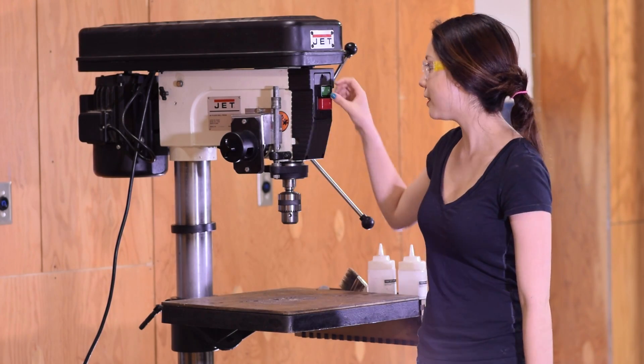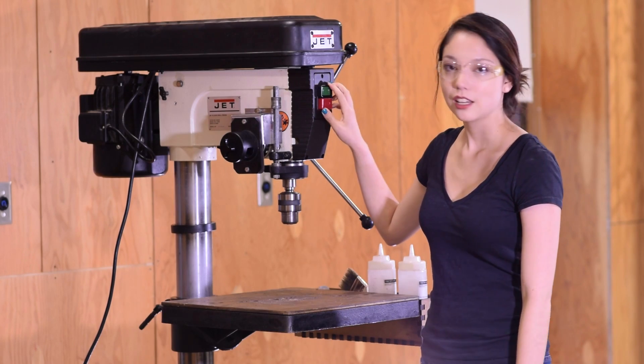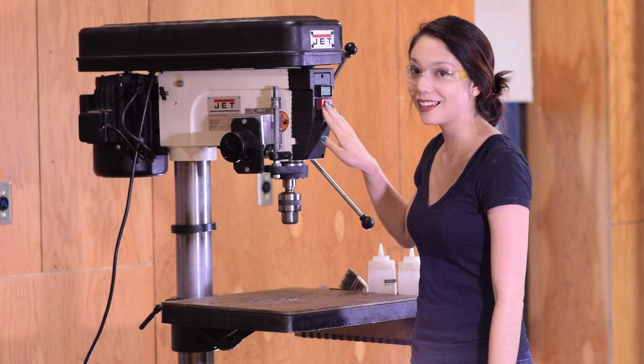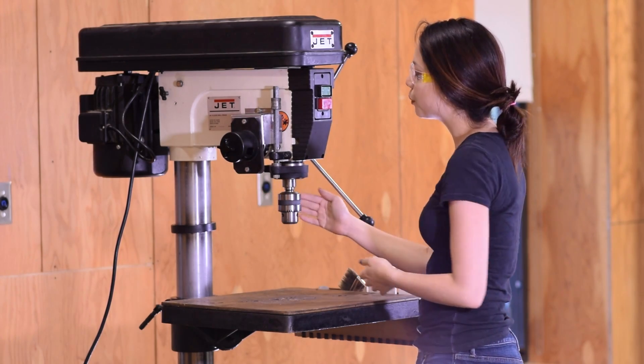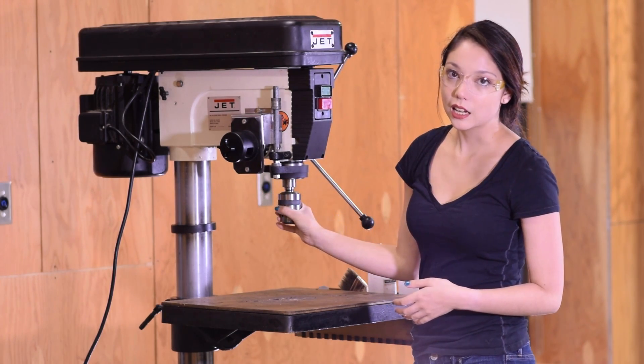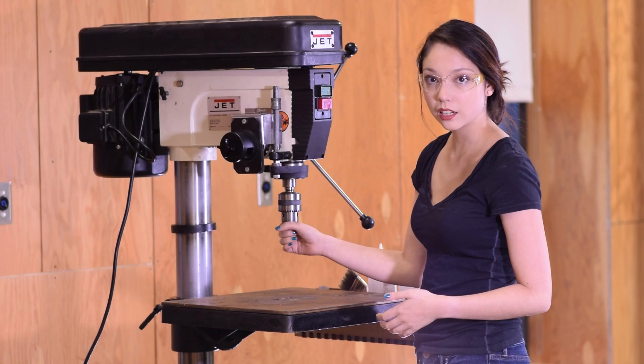You've got your typical start and stop button, so the start button starts the machine, and the stop button stops the machine. This setup here is going to be what holds your bit in, the spindle and the chuck.